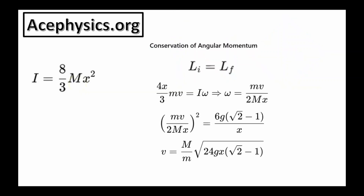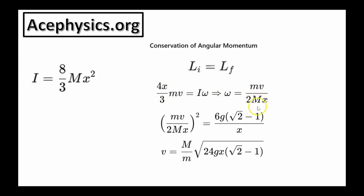To solve for the initial velocity of the bullet, we use conservation of angular momentum. Initially, the bullet has all the angular momentum: the linear momentum of the bullet multiplied by 4x over 3, the perpendicular distance from the rotation axis. This must equal the final angular momentum of the block after the bullet strikes it. We can use this equation to solve for omega. Knowing I, the moment of inertia of the block, we square both sides of the equation and use the expression for omega squared from the energy equation. This allows us to solve for v, the initial velocity of the bullet.